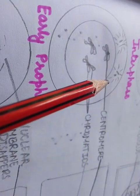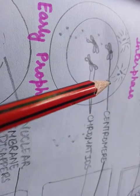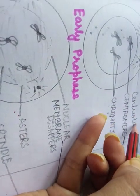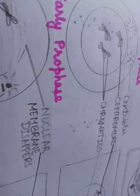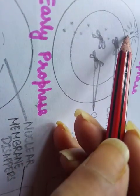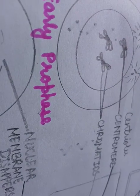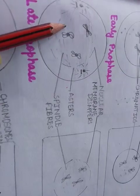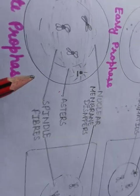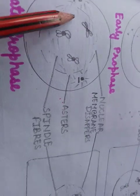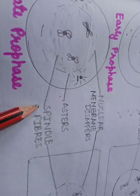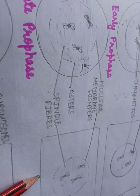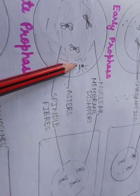The centrosome, found only in animal cells and not in plant cells, also divides into two, and each is now known as a centriole. The centrioles have radiating ray-like structures known as asters. After this, spindle fibers appear in the next stage, attaching to the centromere. This is the same for both the animal cell and the plant cell, except the centrosome is absent in the plant cell.